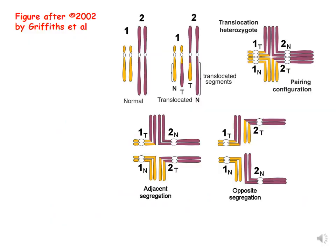Let us understand translocation with the help of this diagram, which is from the book Graphics. Say these are two homologous pairs of chromosomes — the first pair we represent with N1, shown in yellow, and the second pair with N2. Now say crossing over takes place between non-homologous chromosomes. This is illegitimate crossing over, and this process is called translocation.